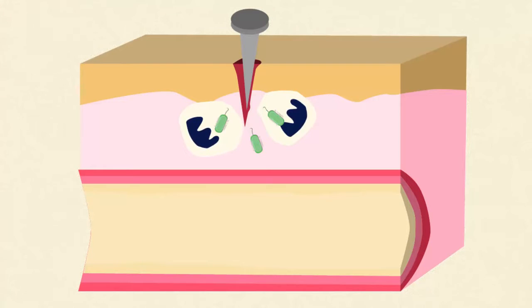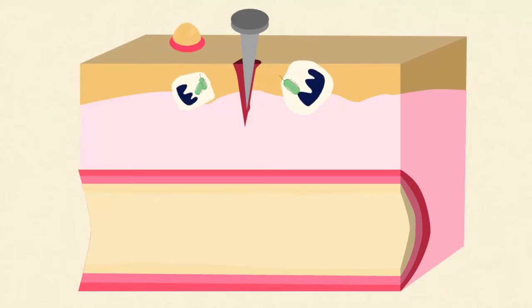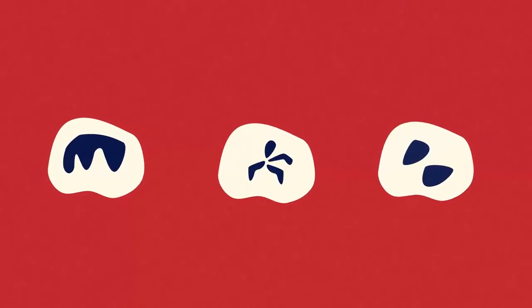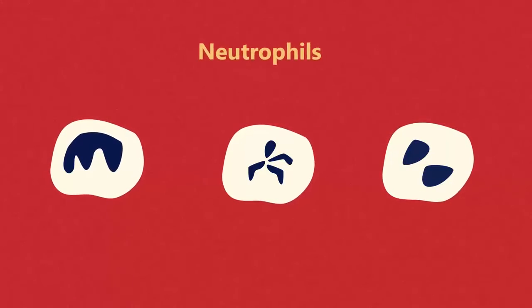They will often die loaded with bacteria that they have engulfed and killed. In boils and cuts this is seen as yellow pus. There are different types of phagocytes with neutrophils being the most common.